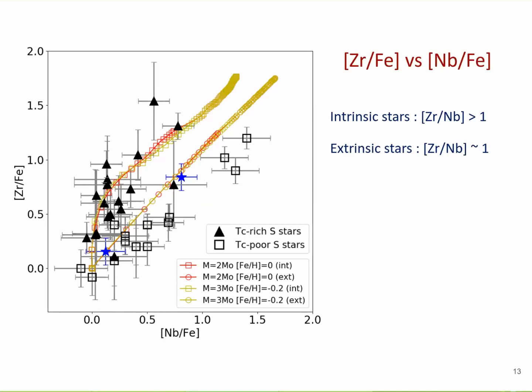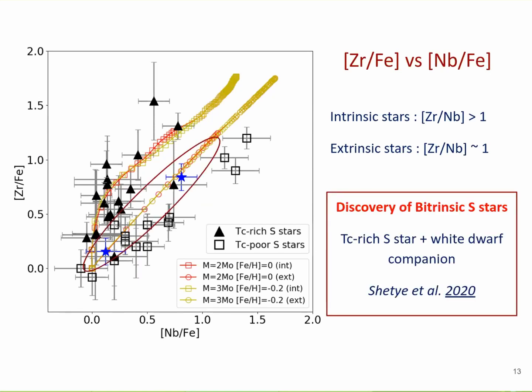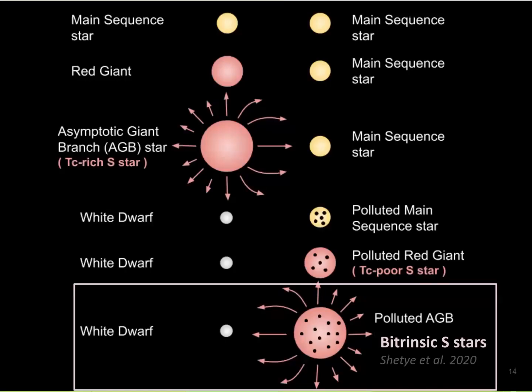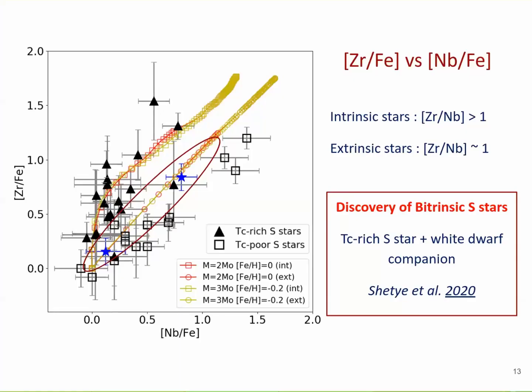What we could also find using this zirconium-niobium analysis is a new class of S-type stars. We labeled them 'bitrinsic' because they show signatures of both intrinsic and extrinsic nature. These stars show technetium features — so they are genuine AGB stars — but they also show a zirconium-to-niobium ratio of one. What we are looking at here is an afterlife of an extrinsically enriched star: an extrinsic star that has itself now evolved to undergo AGB nucleosynthesis. It is nice to see the whole binary evolution scenario becoming complete through these zirconium-niobium abundances.